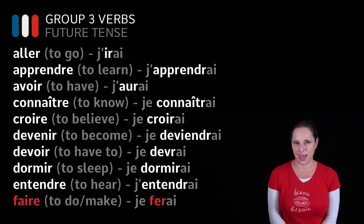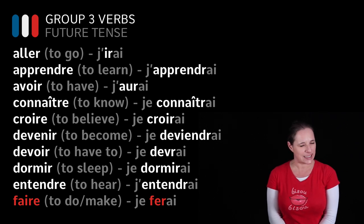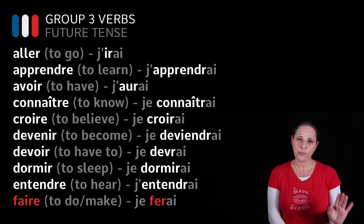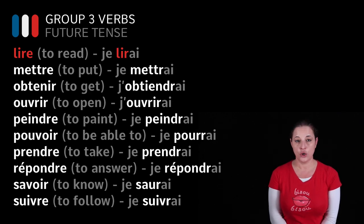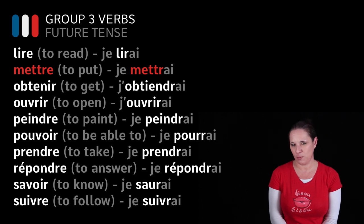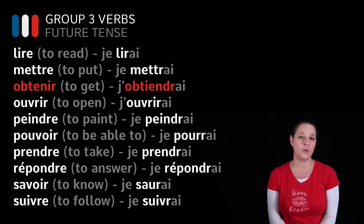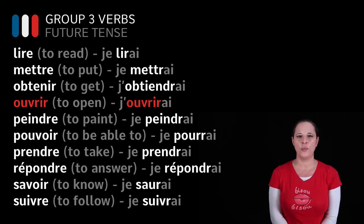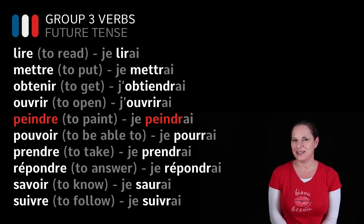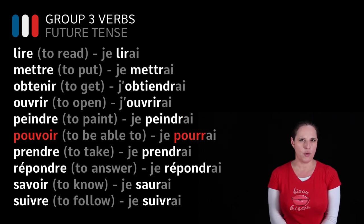FAIRE, to do or to make — JE FERAI, I will make or I will do. Watch out for this one — it's quite different; the stem is not FAI but FER. LIRE, to read — JE LIRAI, I will read. METTRE, to put — JE METTRAI, I will put. OBTENIR, to get — J'OBTIENDRAI, I will get — slightly different from OBTENIR, the infinitive form. OUVRIR, to open — J'OUVRIRAI. POUVOIR, to be able to — JE POURRAI, I will be able to.